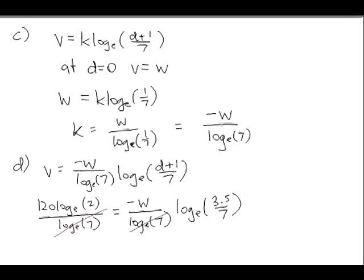Leave it at that for now. Now, look what else we can do. We can see that 120 log to the base E, 2 equals negative W. Log, now 3.5 on 7 is half, isn't it? Now, what you can do is recognize that half is 2 to the power of negative 1. Take out the negative 1 and you'll get W log 2.